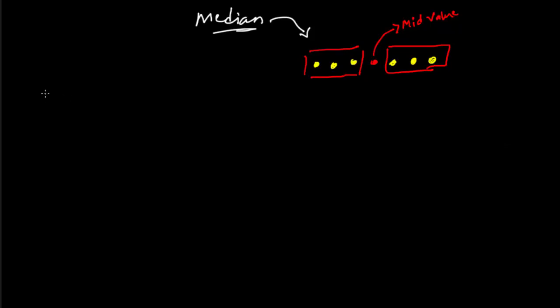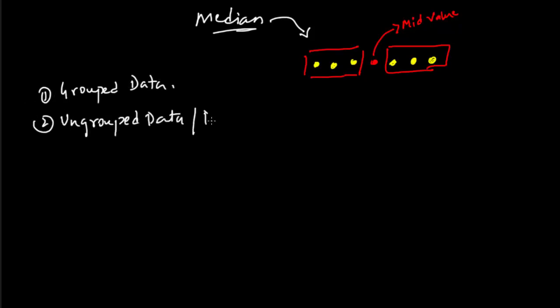Whenever you have to find the median, the given data set in the question will be of two types. One is grouped data and the other is ungrouped data or discrete series. In case you haven't watched the video where I explained what those two types of data sets are, I recommend you watch it — the link will be in the description. So, let's learn how to find the median in each of the cases.